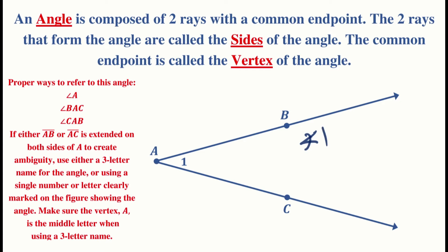Sometimes ray AB or AC has extensions on the other side of A as well. When that is the case — if either of those extensions is present — you definitely do not want to use the single letter A as the designation of this angle. In that case, either use a clearly depicted single label inside the angle, or use the three-letter notation. When using three letters, make sure the vertex is always the middle letter.